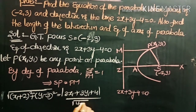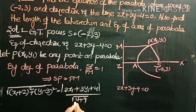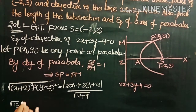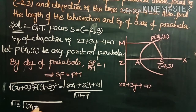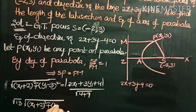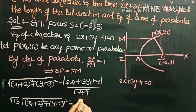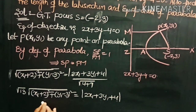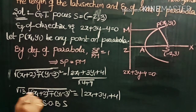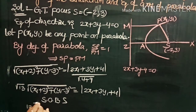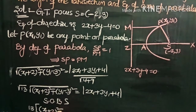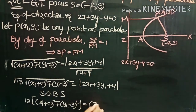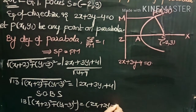PM = |2x1 + 3y1 - 4| / √(2² + 3²) = |2x1 + 3y1 - 4| / √13. Transposing: √13 · √[(x1+2)² + (y1-3)²] = |2x1 + 3y1 - 4|. Squaring both sides: 13 · [(x1+2)² + (y1-3)²] = (2x1 + 3y1 - 4)².